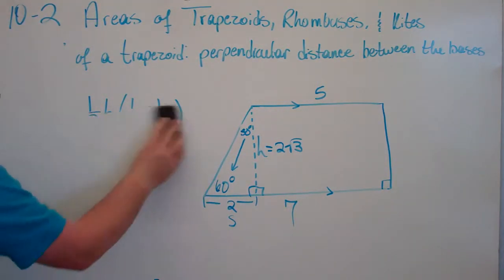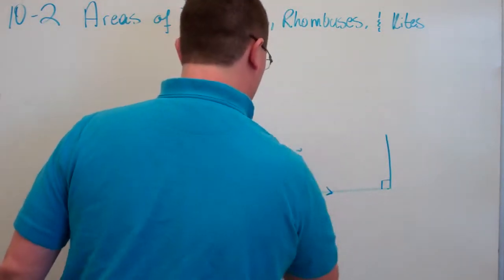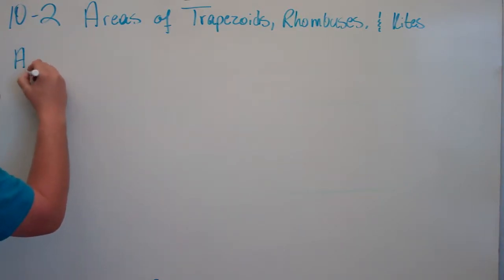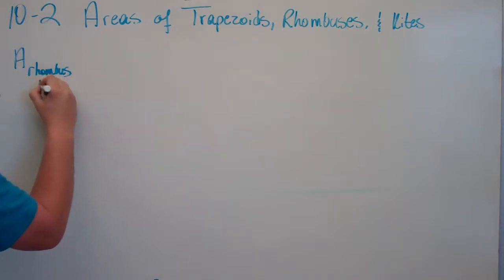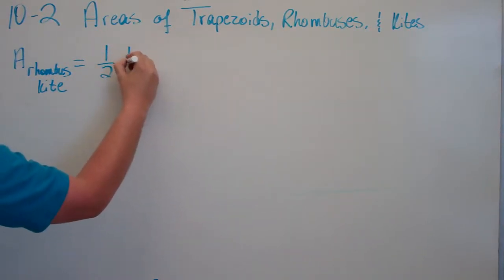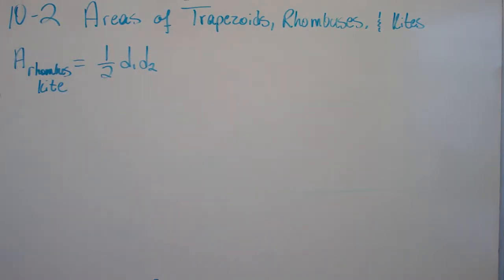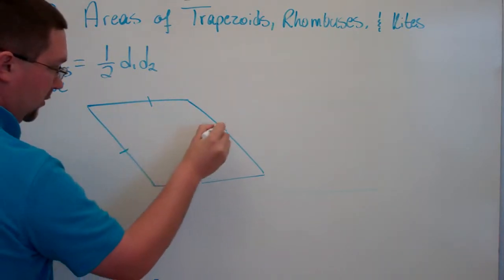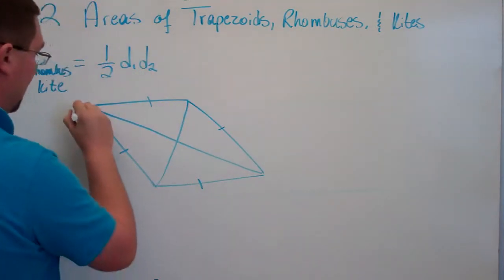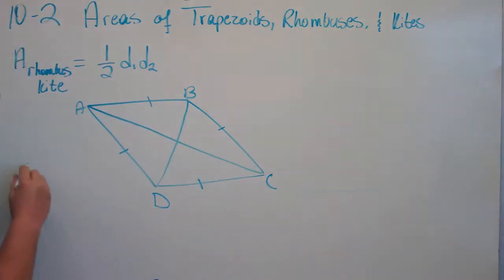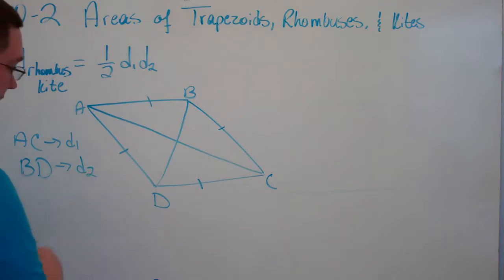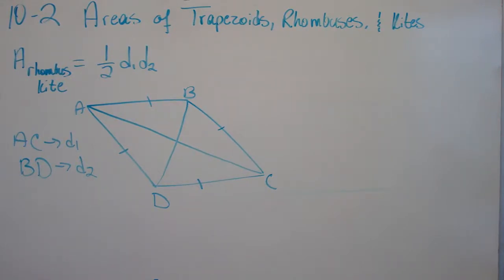Now let's look at the area of rhombuses and kites. The cool thing is you only have to remember one formula for both. The area of both a rhombus and a kite is simply one-half diagonal one times diagonal two. Here we have a rhombus. We can call line AC diagonal one and BD diagonal two. You simply multiply the length of AC times the length of BD and then take half of it. A kite uses the same formula.